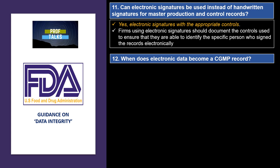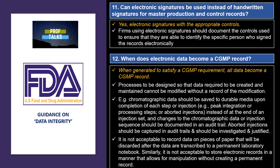When does electronic data become CGMP data? Whenever any data is generated to satisfy a CGMP record or a CGMP requirement, it becomes a CGMP record. Processes should be designed so that required data cannot be modified without a record of modification. For example, chromatographic data should be saved to a durable media upon completion of each specific step — such as integration or processing — not at the end of the entire process. Audit trail should be contemporaneous. Aborted injections should be captured in the audit trail, investigated, and justified. It is not acceptable to record data on pieces of paper first — the first entry should be made onto the original record itself.